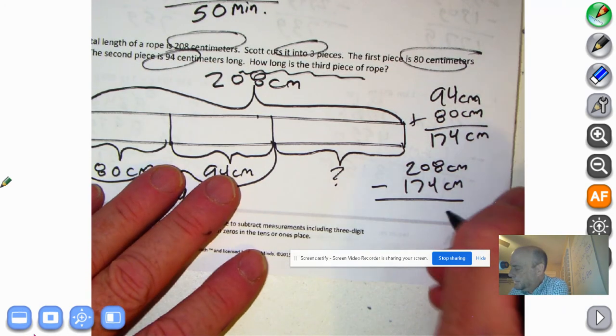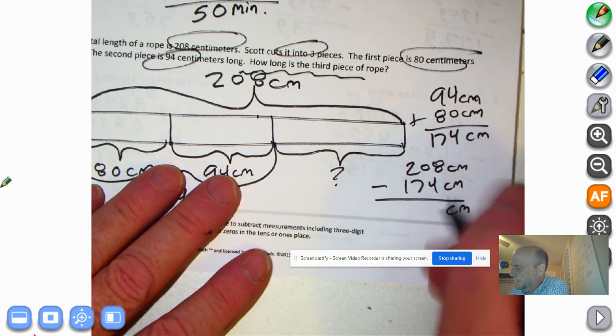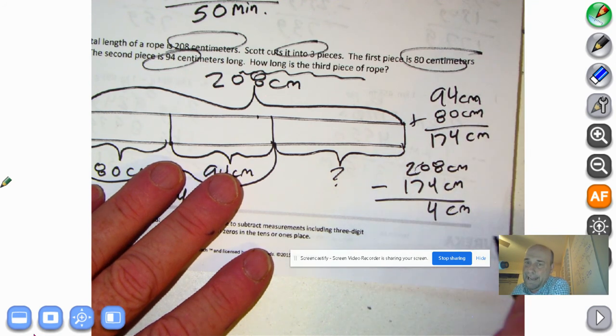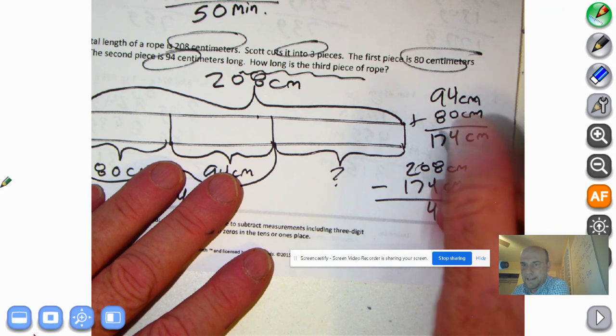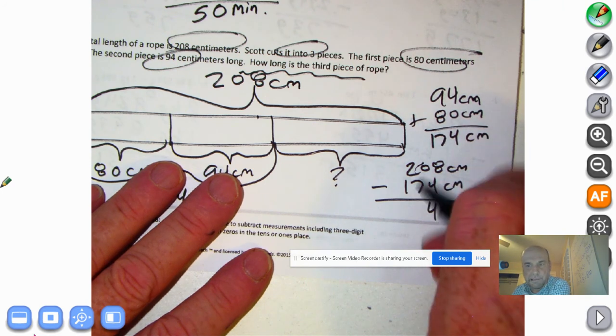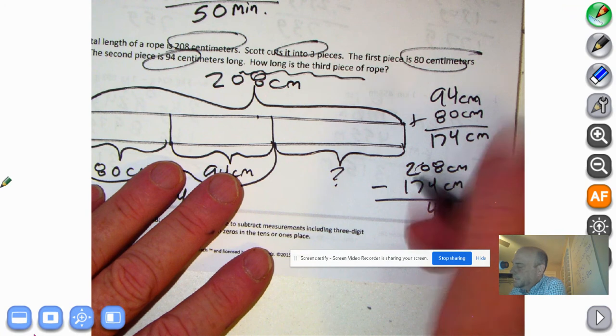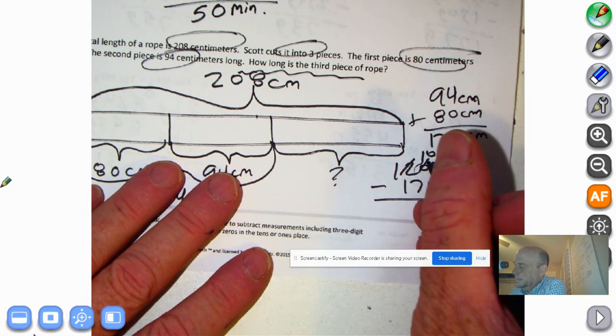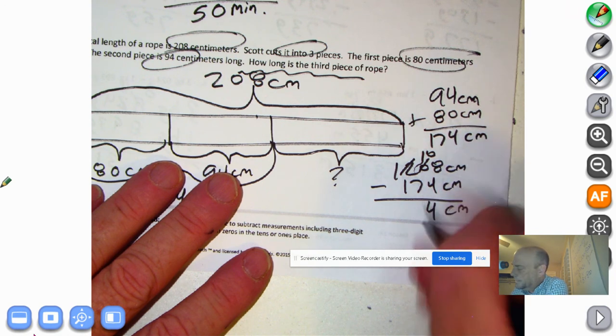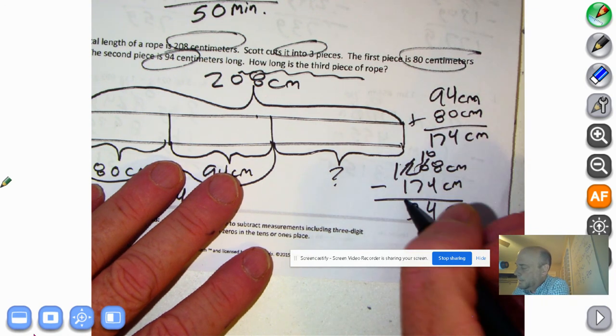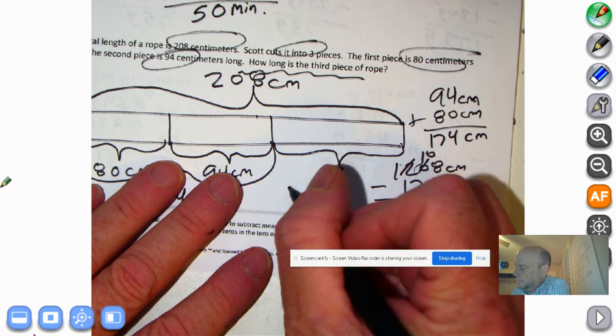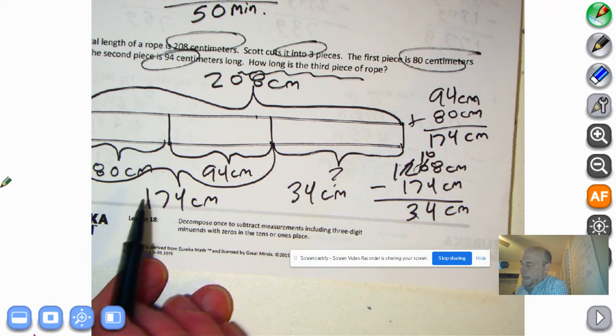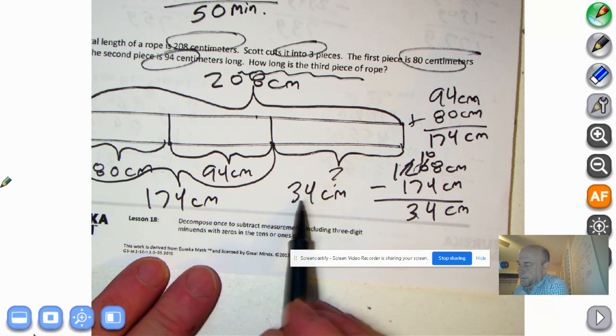And welcome back. First thing we do is we drop down our centimeters. 8 centimeters minus 4 centimeters is 4 centimeters. Can't take 70 away from 0. We don't subtract up. So we're going to decompose 100, make 10 tens here. 10 tens minus 7 tens is 3 tens. And there's our answer because 100 minus 100 is 0. So this mystery length of rope is 34 centimeters. I bet if we added 174 and 34, we'd get 208.